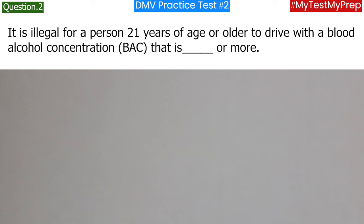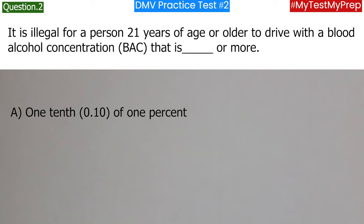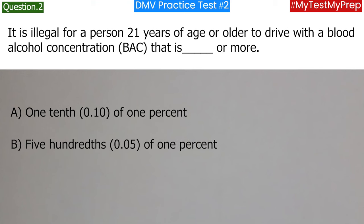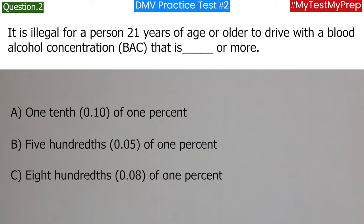It is illegal for a person 21 years of age or older to drive with a blood alcohol concentration (BAC) that is or more: a. 1 tenth (0.10) of 1 percent; b. 5 hundredths (0.05) of 1 percent; c. 8 hundredths (0.08) of 1 percent. Answer: c. 8 hundredths (0.08) of 1 percent.